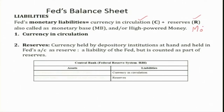The two components of the FED's liabilities are: one is currency in circulation and the second one is reserves. This is also called the monetary base, also called high-powered money, and defined earlier as M0 money. So the monetary liabilities equal currency in circulation plus reserves. Currency in circulation means the amount of currency in the hands of the public. Please note that currency held by depository institutions is a liability of the FED, but it is counted as part of reserves, not part of currency in circulation.